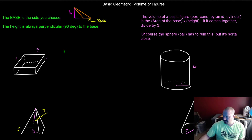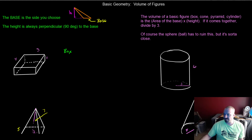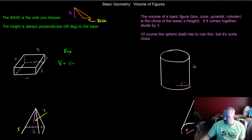So I have a box. We're going to assume this is a nice box so that all of the sides are perpendicular to one another — it's not a parallelepiped, which is a parallelogram in three dimensions. The volume is the area of the base, which is length times width, times the height. The box does not come together; we do not divide by three.